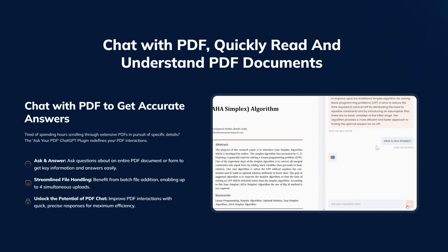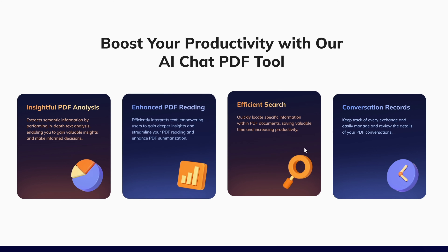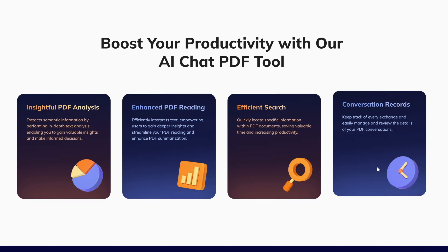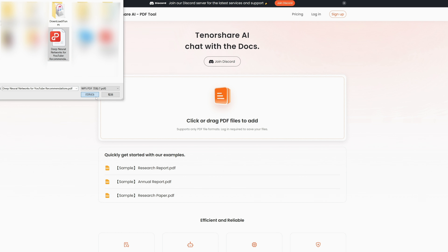Welcome back to the channel. AI PDF chat tool is an AI-powered app that makes reading easier and faster. You can perform tasks such as file conversion, text extraction, document merging, and much more through a ChatGPT-style interface — ask your PDF questions as simply as chatting with a friend. Today I'll introduce Tenorshare AI PDF, which supports simultaneous upload of multiple documents in multiple languages and several formats including PDF. Data is encrypted and stored temporarily during processing. Features include insightful PDF analysis, enhanced PDF reading, efficient search, conversation records, and the ability to quickly locate specific information.